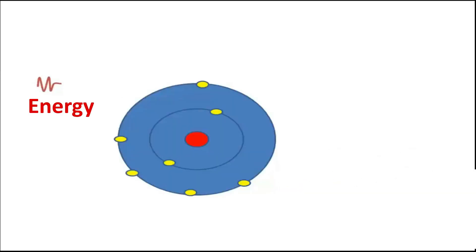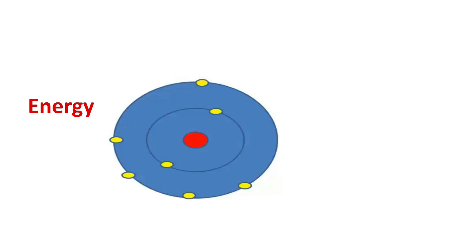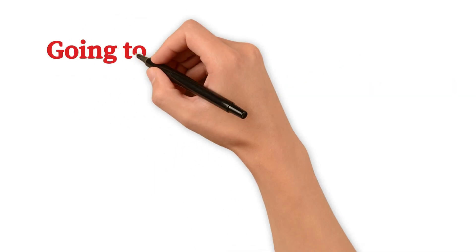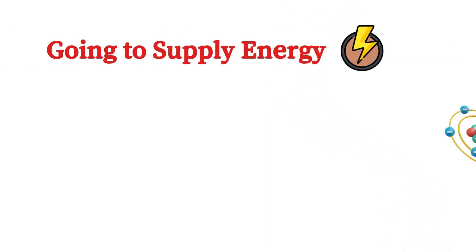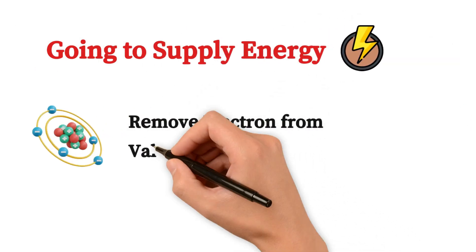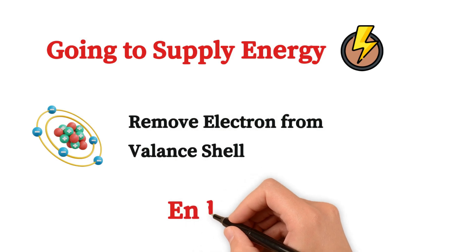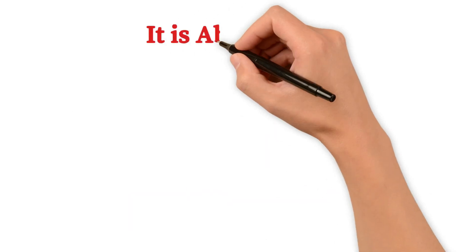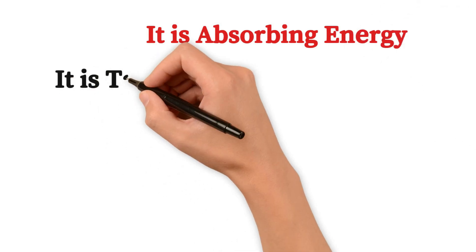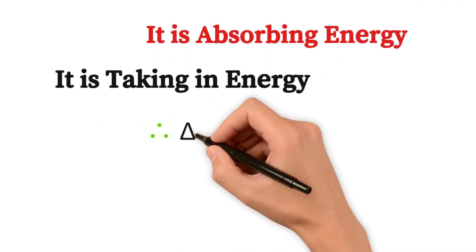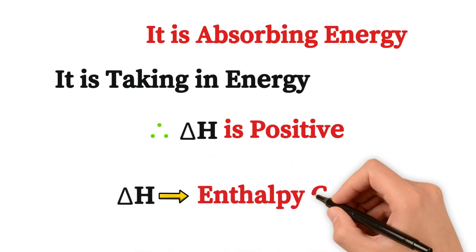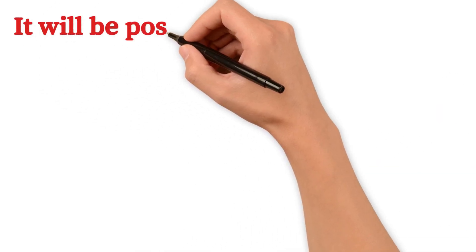The amount of energy required to remove an electron from the outermost shell or valence shell. Since we are supplying energy and removing an electron from the valence shell, it is endothermic because it is absorbing energy. Therefore delta H, which stands for enthalpy change, will be positive.